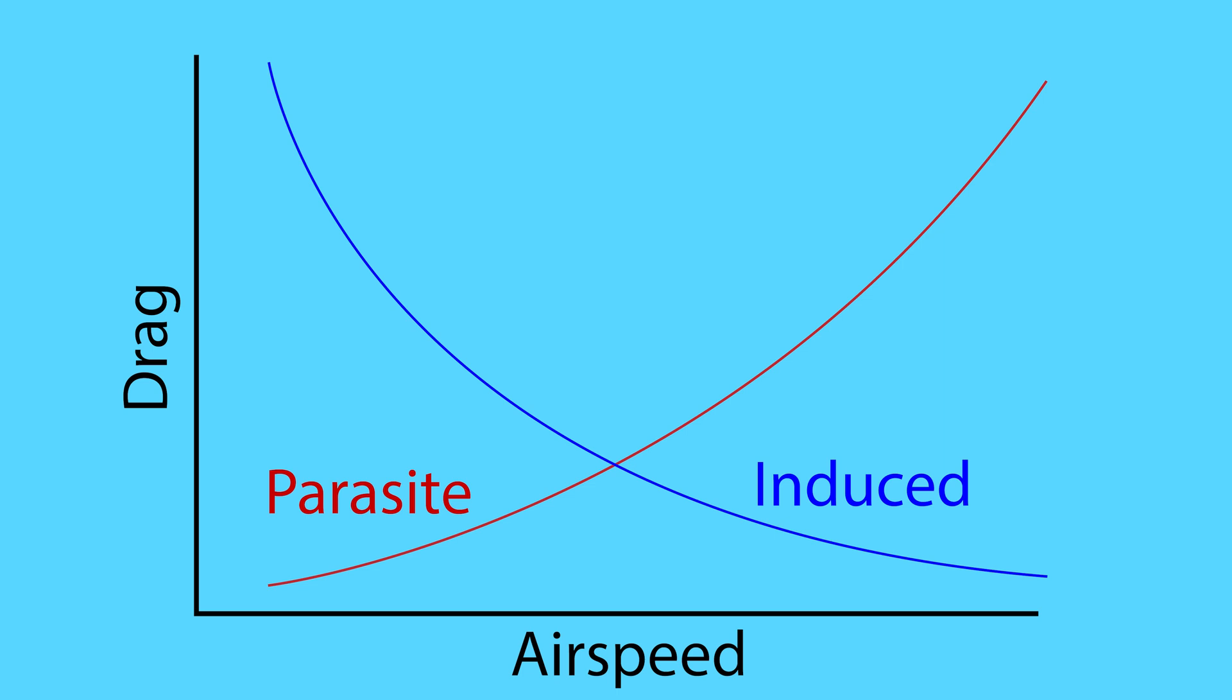Let's now go back to the drag chart we used to show drag with airspeed. We can add together both the induced drag and parasitic drag to create a line of total drag. You can see that the least total drag occurs at the point where the induced drag and parasitic drag lines intersect. This is called the maximum lift over drag speed or LD max.